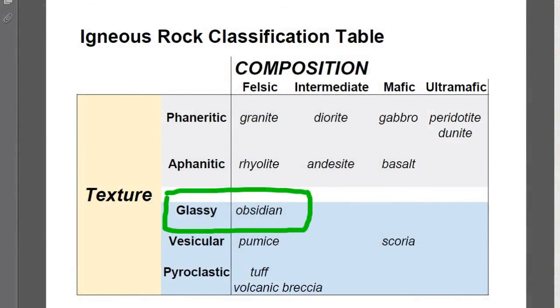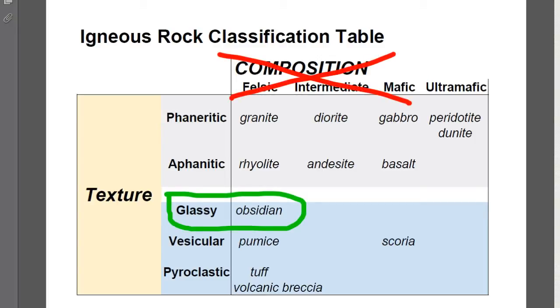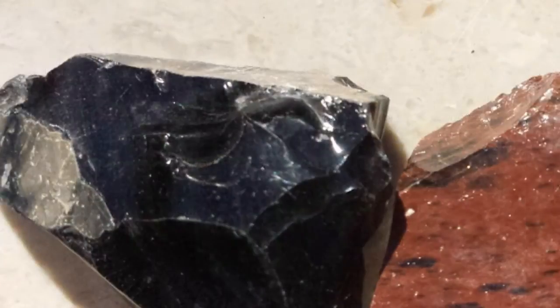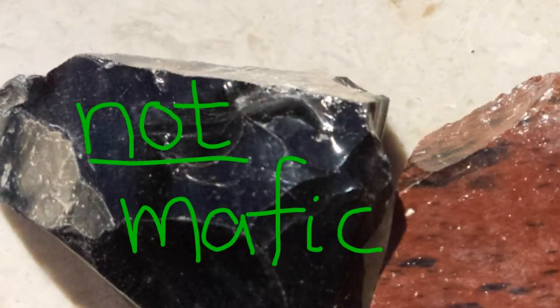The igneous rock name for volcanic glass is found in the classification table: obsidian. When we identify obsidian, we ignore the color as a proxy for composition. Otherwise, we would identify black-colored obsidian as mafic in composition, and that would generally be incorrect.